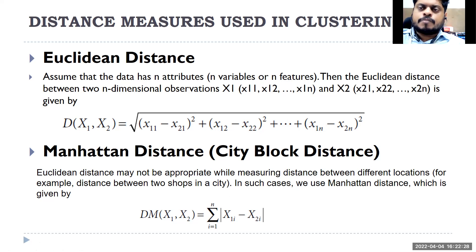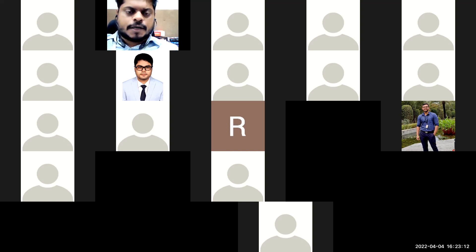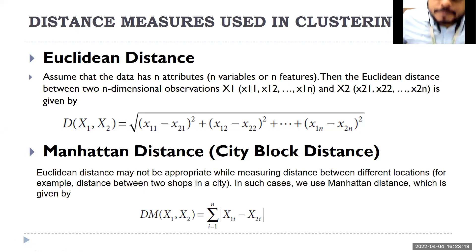It seems easy whenever we have two variables, but naturally whenever we are comparing or forming groups, there will be multiple variables. Before starting this discussion, let me share the file we are going to work on. We are going to work on a clustering dataset — country-wise details are given. Please keep your interface open; I'll come back and carry out the exercise.